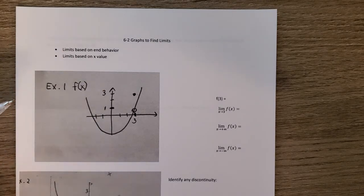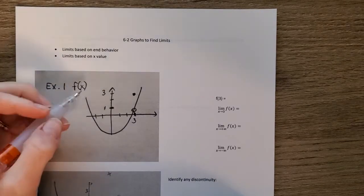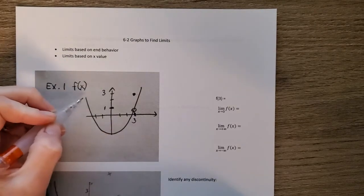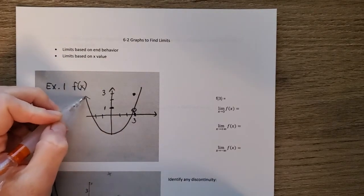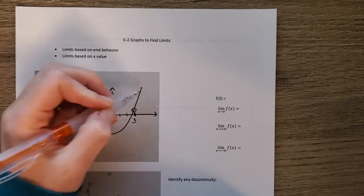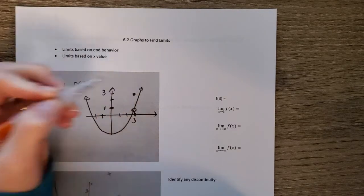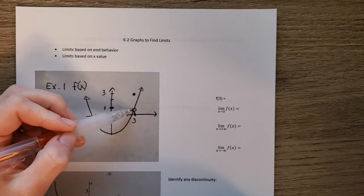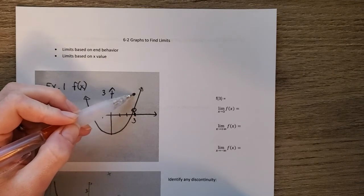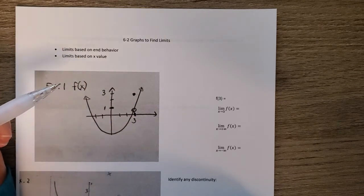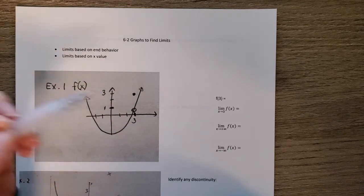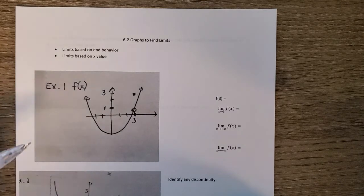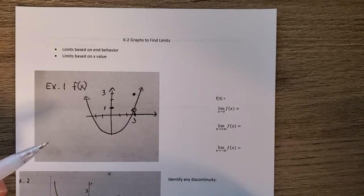The first example has a graph of a parabola with arrows at the ends. This parabola has a hole with a defined value above it. We're going to answer the questions and think about what this means in terms of limits.